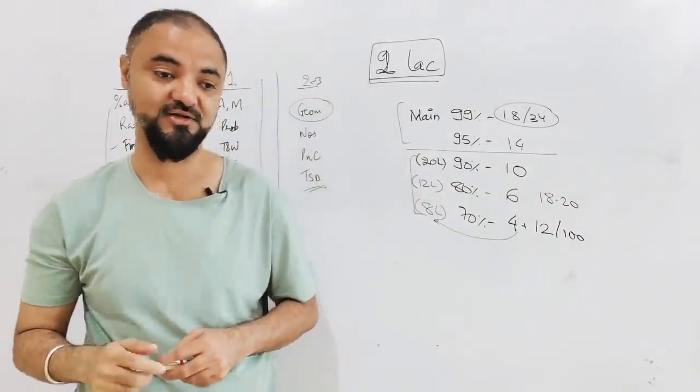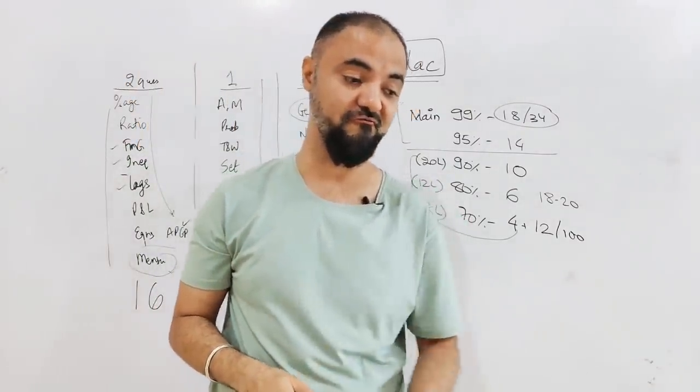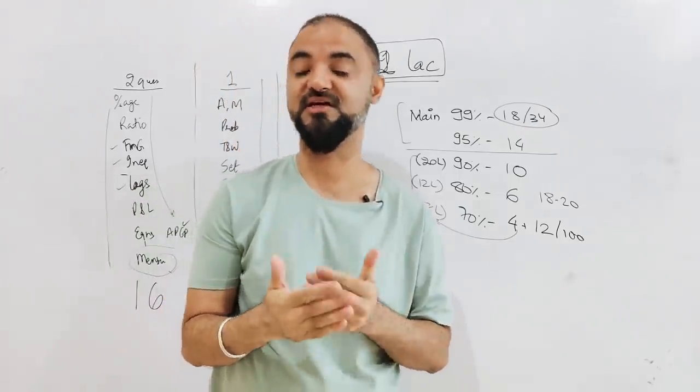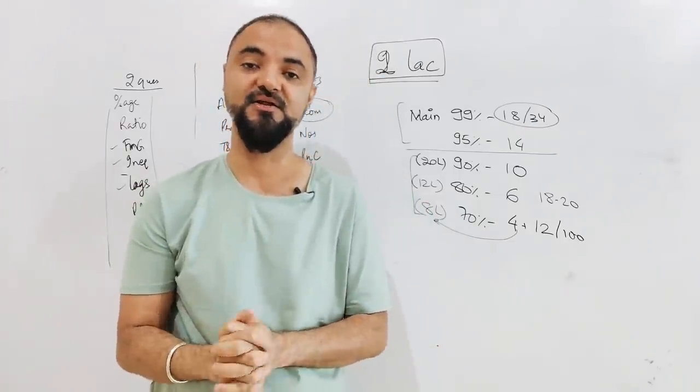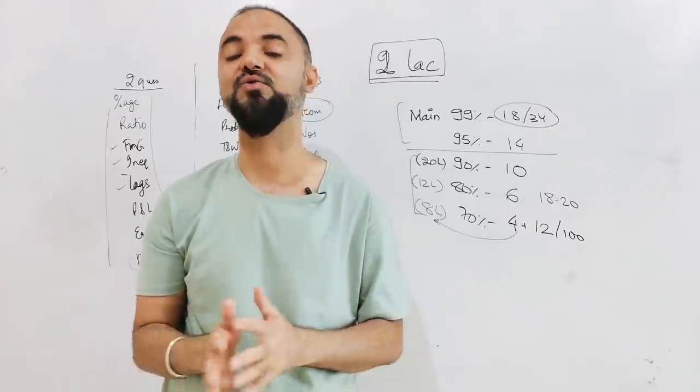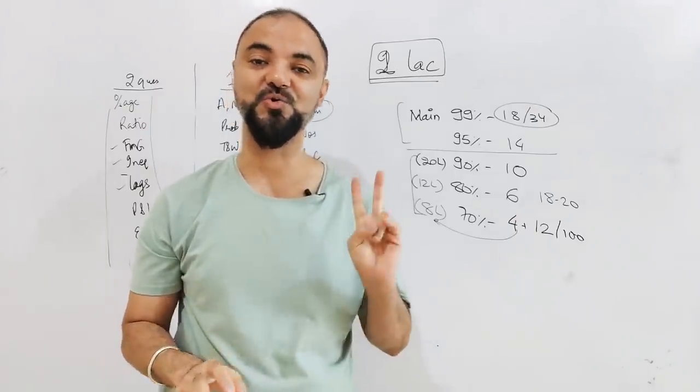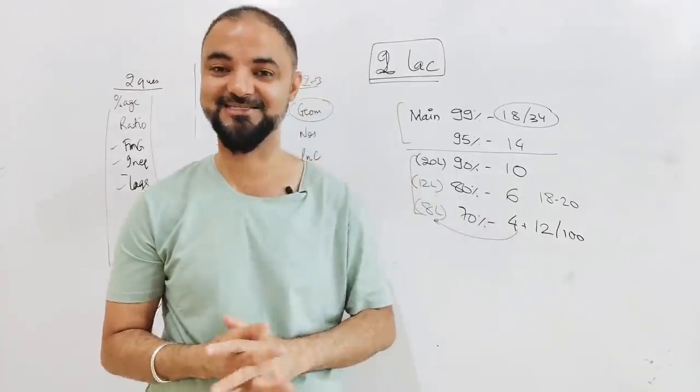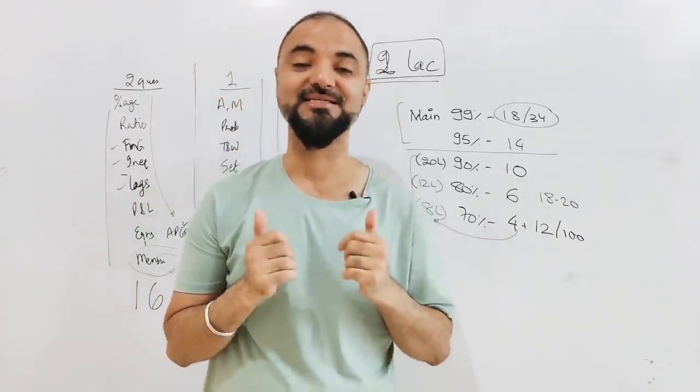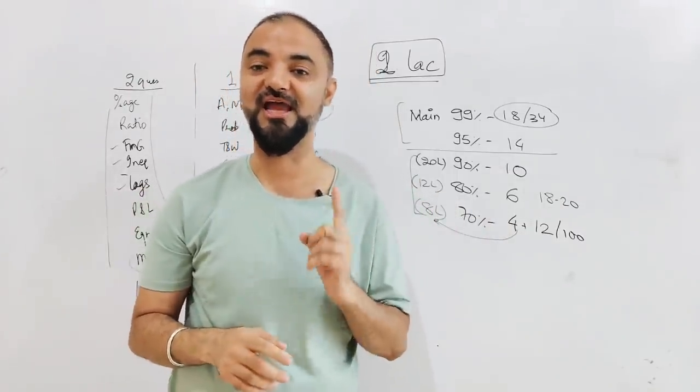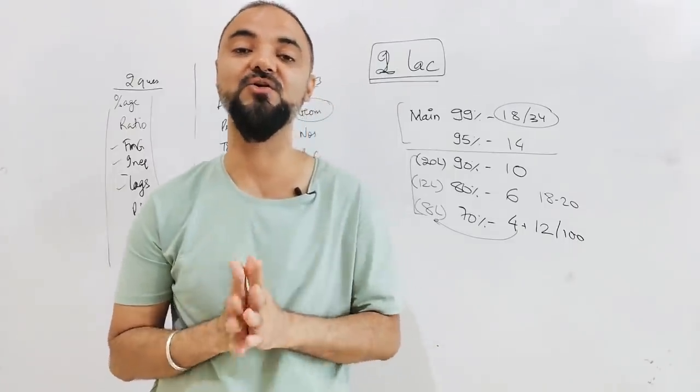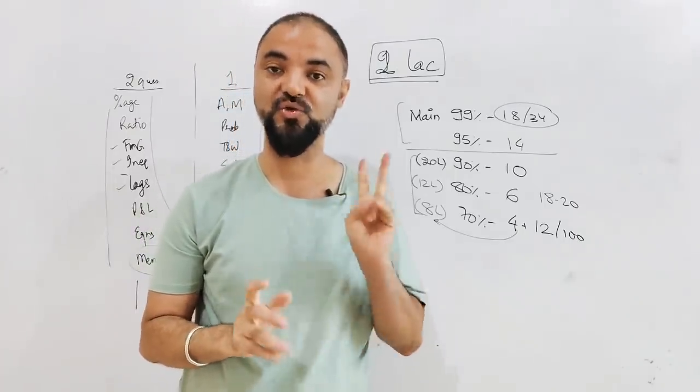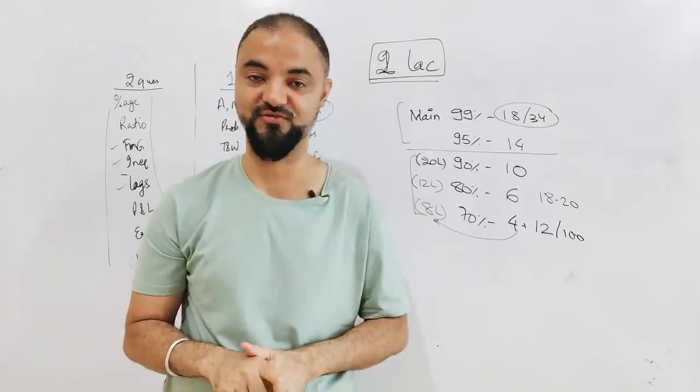Look at it another way: those who are working jobs, you are working for a full one year to earn a package of 4 lakhs. Here, 2 questions correct is a salary of 4 lakhs. 4 questions correct is a salary of 8 lakhs. I'm just trying to joke, this is just to motivate everyone. This will make you understand the value of doing a question correctly. 2 lakh rupees per question is the value of a CAT paper.